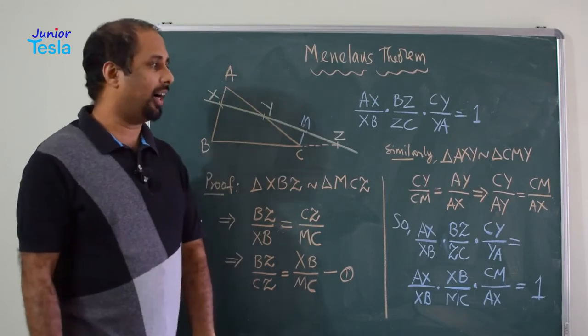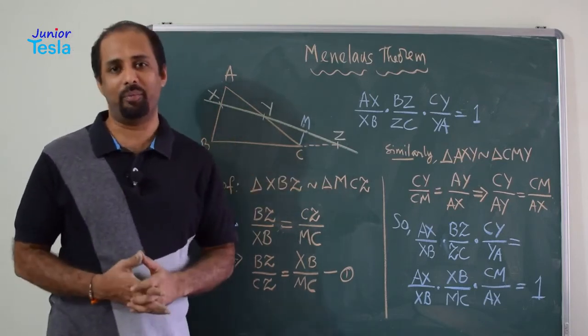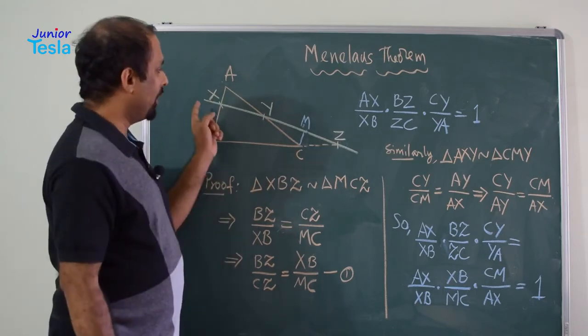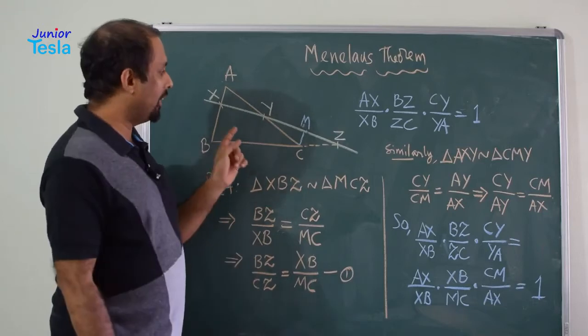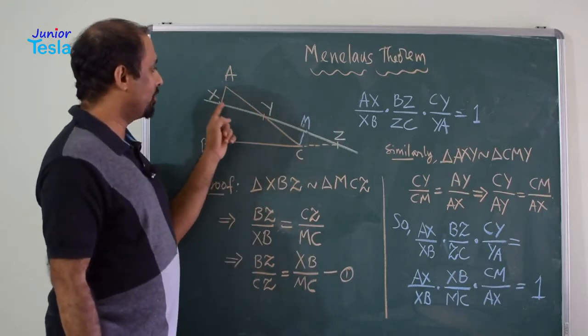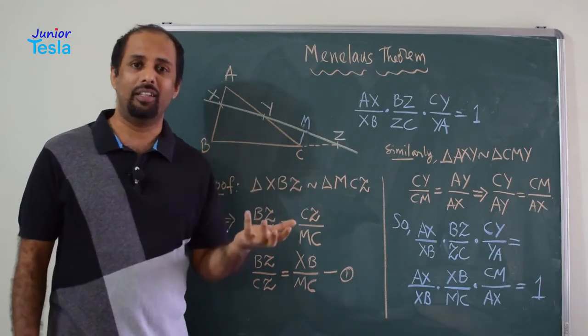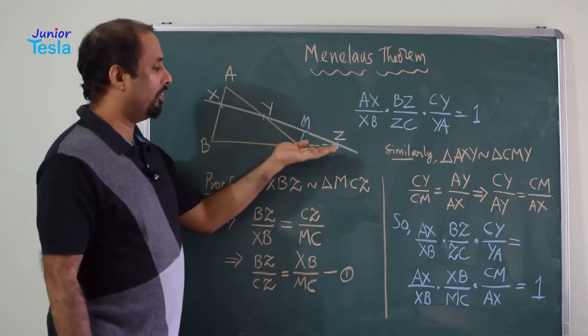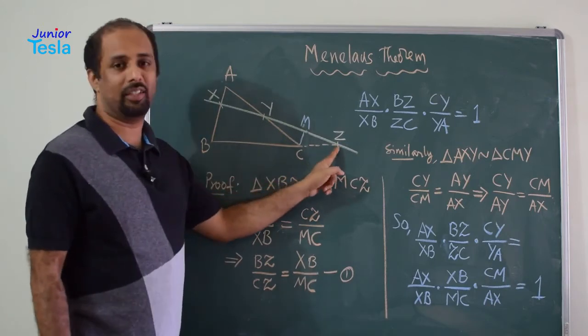Let me tell you how a line cuts the three sides of a triangle. If you have drawn a line, it will cut two sides of the triangle that is evident. Here also, it is cutting the two sides of the triangle at X and Y. But how does it cut the third side? Only if you extend one of the third sides, then you will get to know that the line segment will cut the third side.